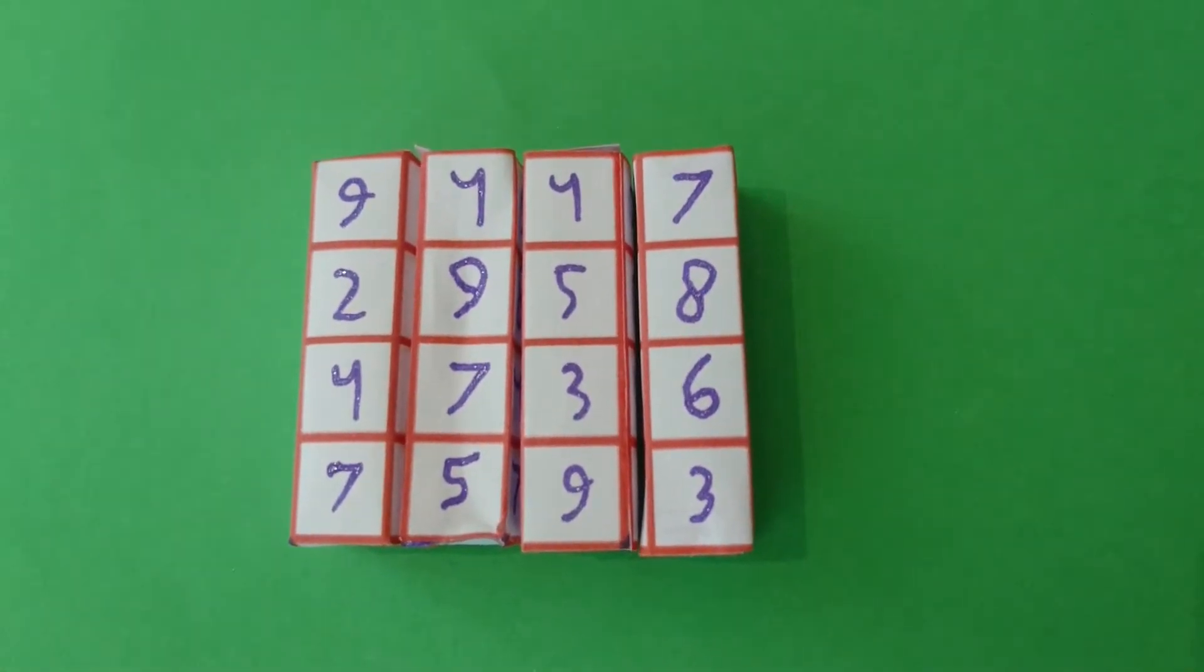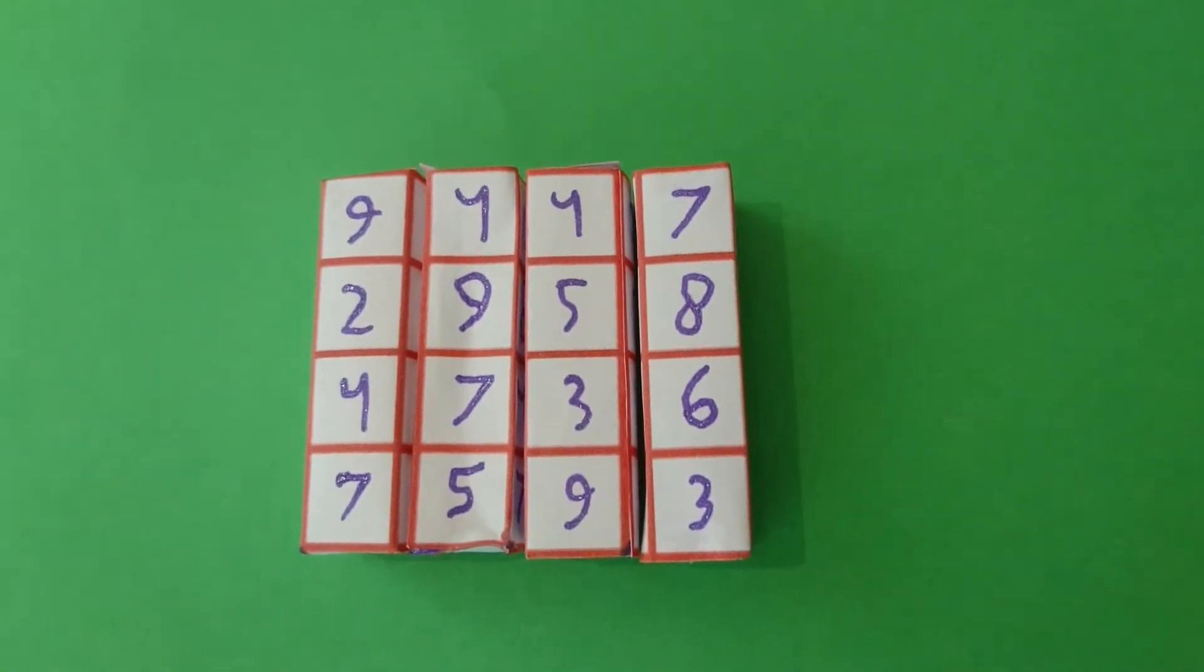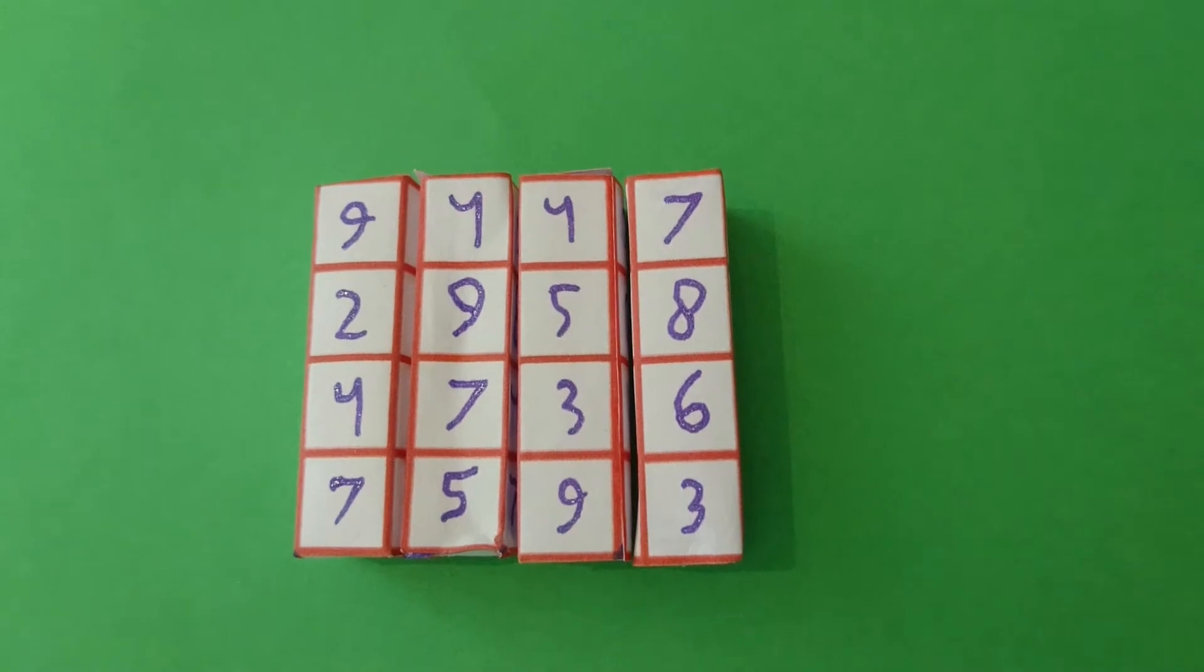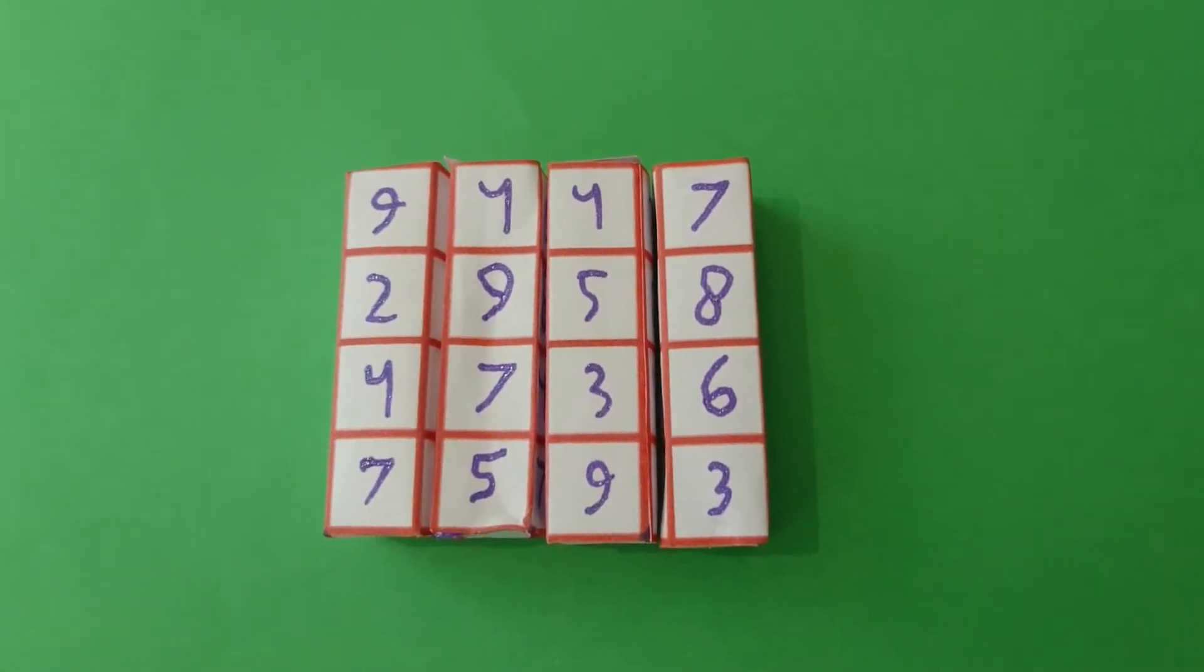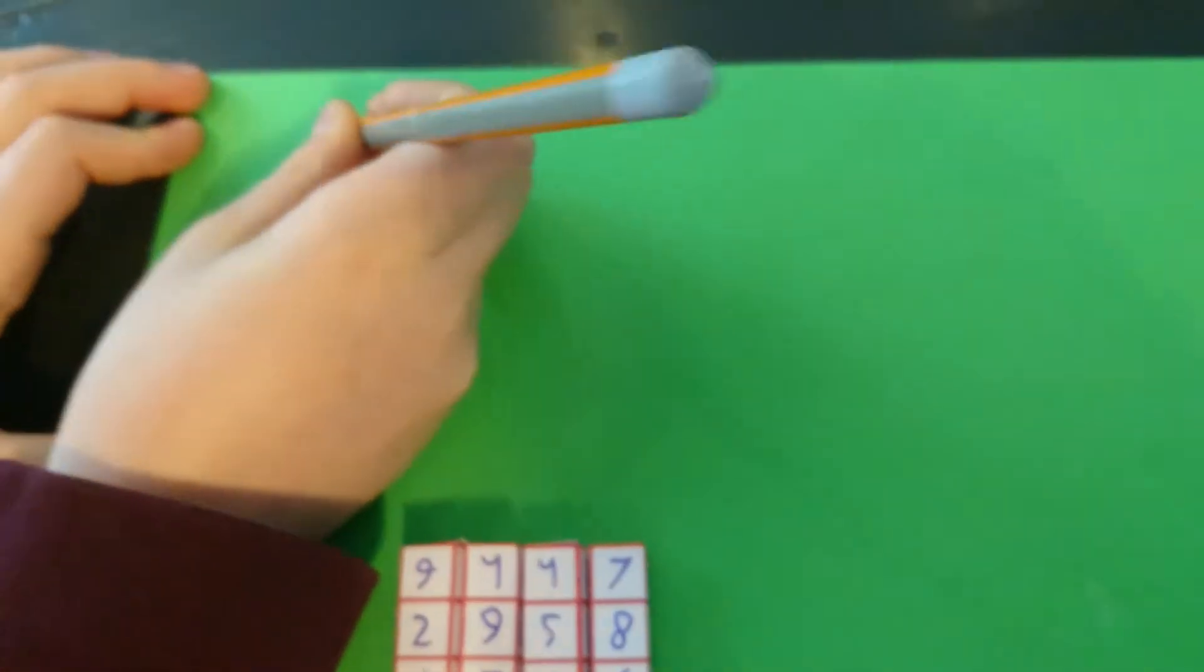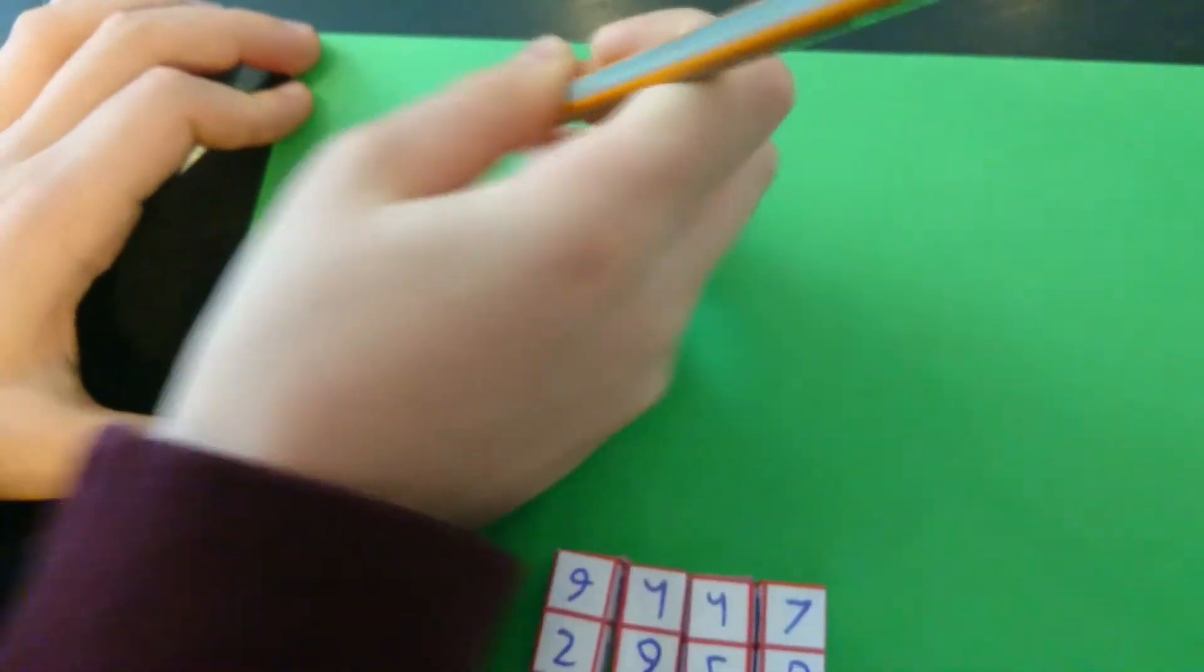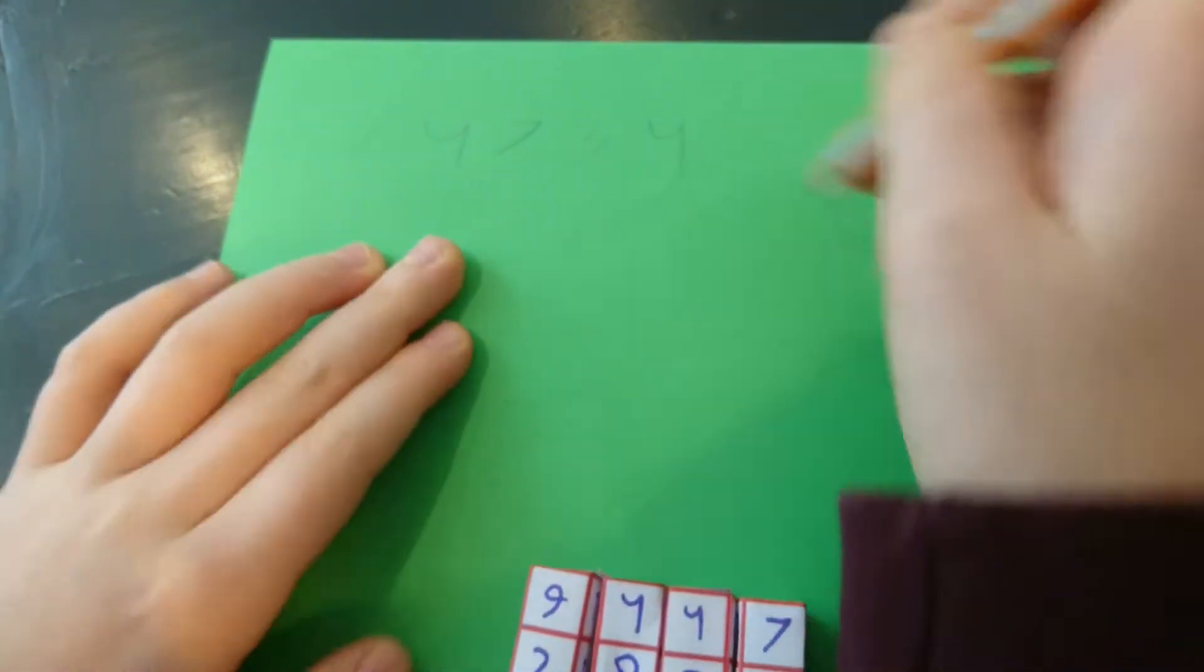I'd like you to add them together. You can do that using a calculator. But before you do that, I'm going to tell you the total is going to be 24,734. Write that down. Write that down here on the green paper: 2-4-7-3-4.